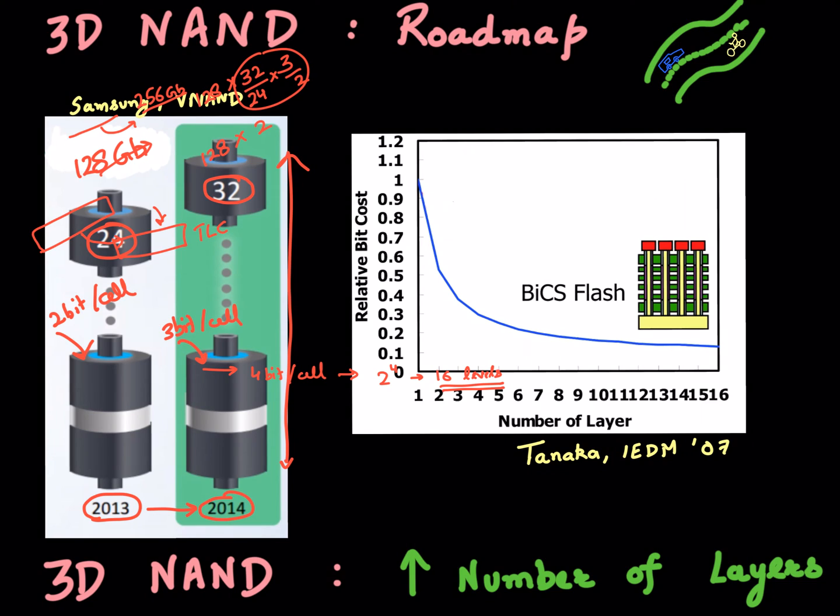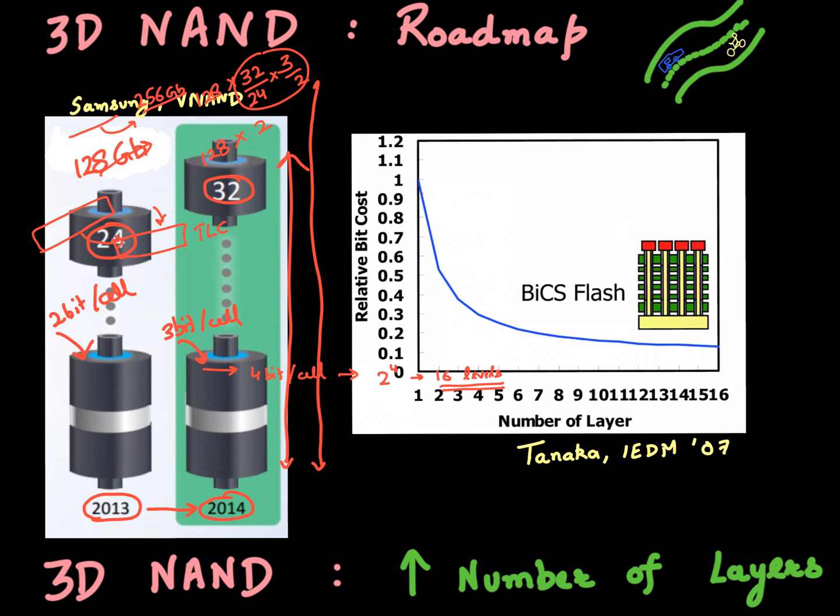But you can still have more and more memory capacity by just packing more and more number of layers in each of these channel holes. There's nothing stopping you from packing 48, 64, or even 96 of these word lines in just one channel hole.